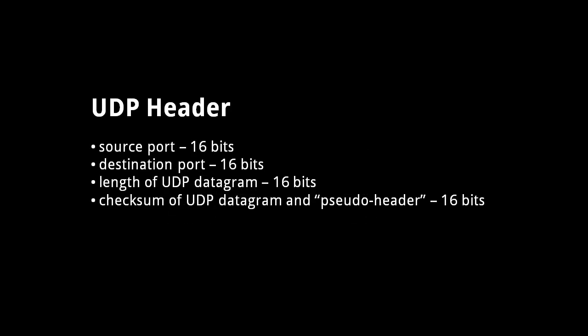Looking at the details of a UDP header, we have the source and destination port numbers, but then also have a field designating the length of the entire UDP datagram, and then a checksum that covers not just the datagram, but also a pseudo-header — meaning parts of the containing IP header, including the source and destination IP addresses. By checksumming this information,